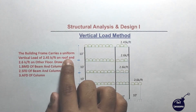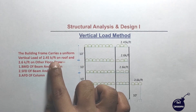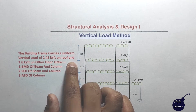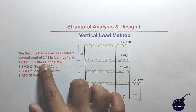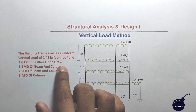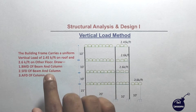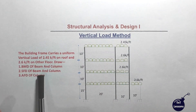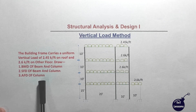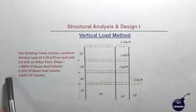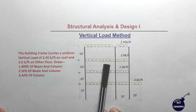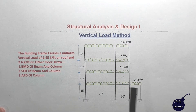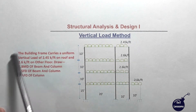The building frame carries a uniform vertical load of 2.45 kg per feet on the roof and 2.6 kg per feet on the other floor. Draw a bending moment diagram of beam and column, draw a shear force diagram of beam and column, and also an axial force diagram of the column.